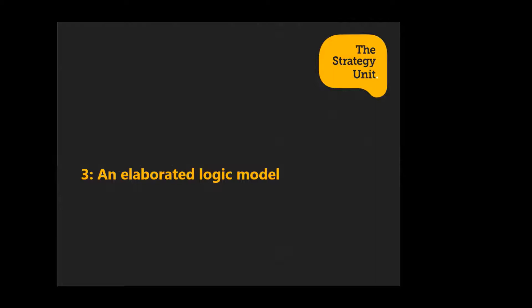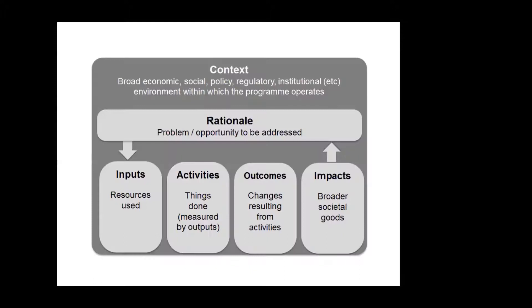We've seen the basic logic model and I've made the case for logic models generally. Now I want to elaborate the basic version and talk more about the different elements, defining them more precisely. Here's an elaborated logic model template. It has the basic input-activity-outcome-impact structure, but we've added two elements: rationale — the problem or opportunity to be addressed — and context, which fits around the whole logic model. I'll talk about each one in the order I'd recommend you construct your logic model.